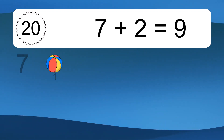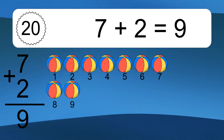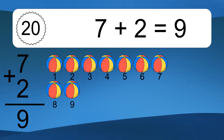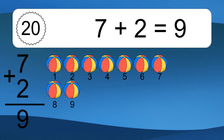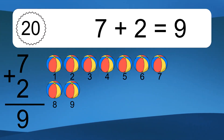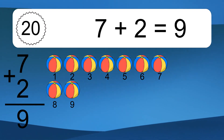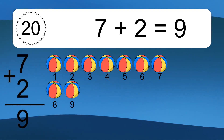7 plus 2 equals 9. Let's count it: 1, 2, 3, 4, 5, 6, 7, 8, 9.